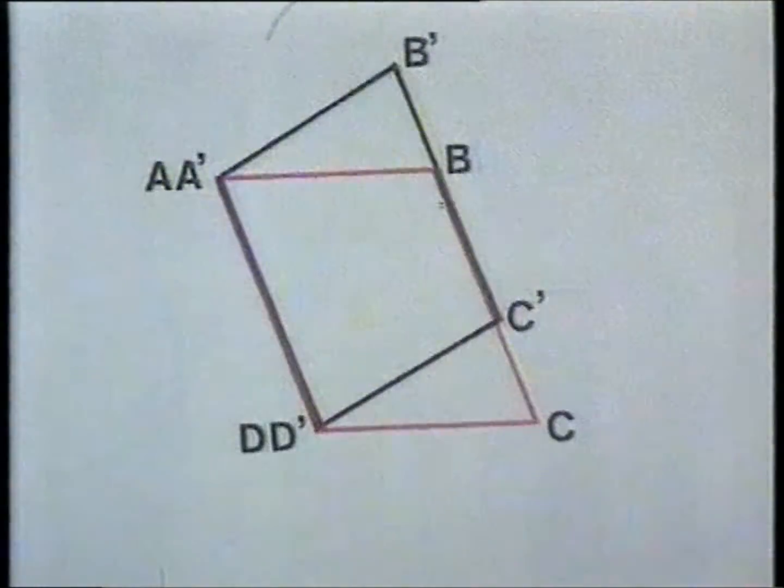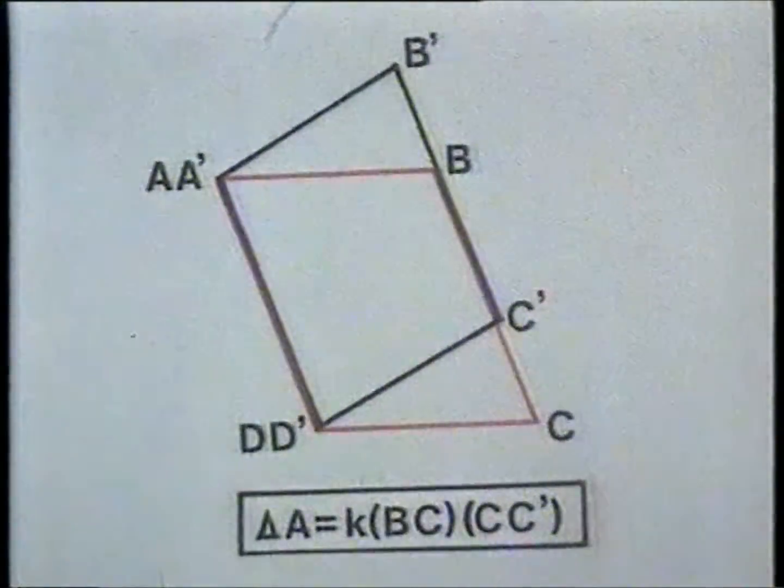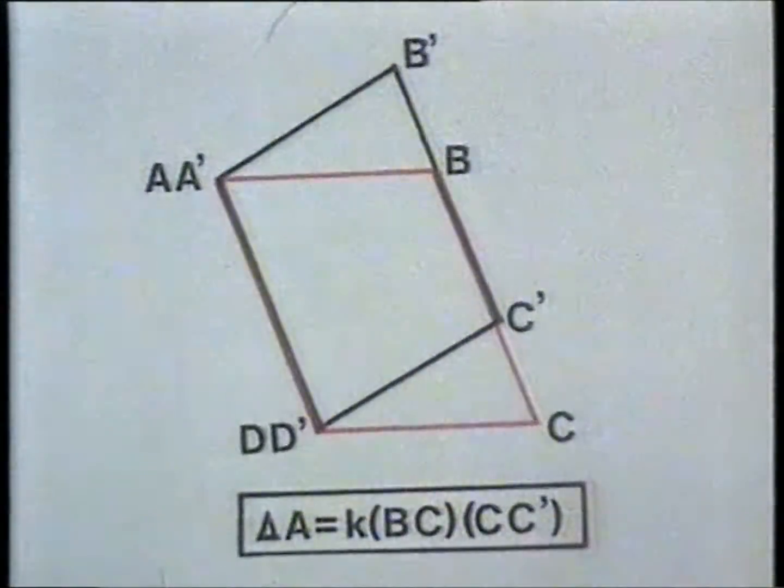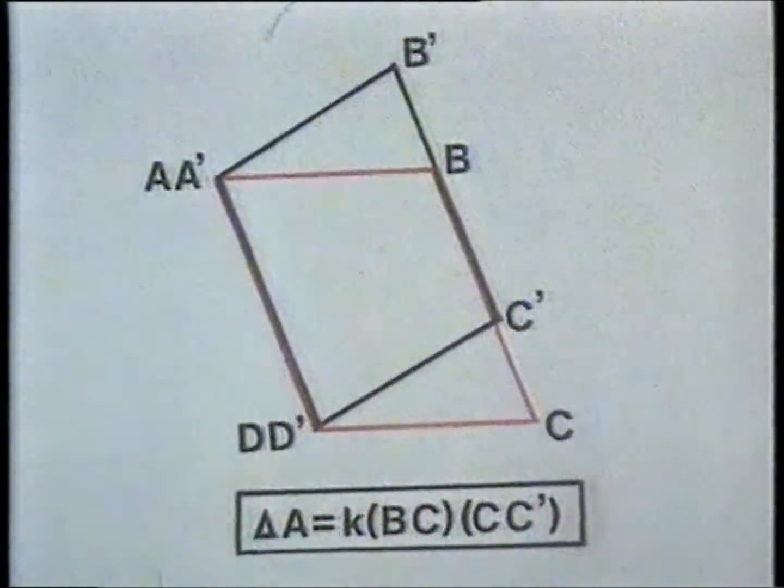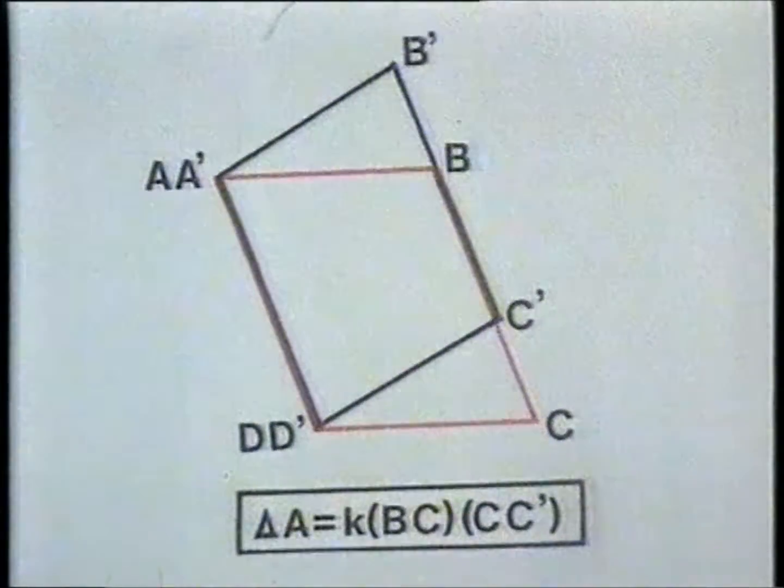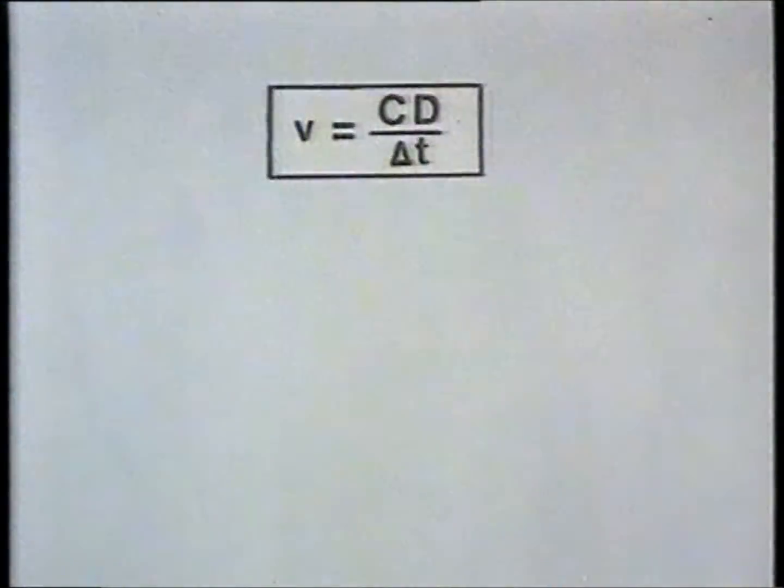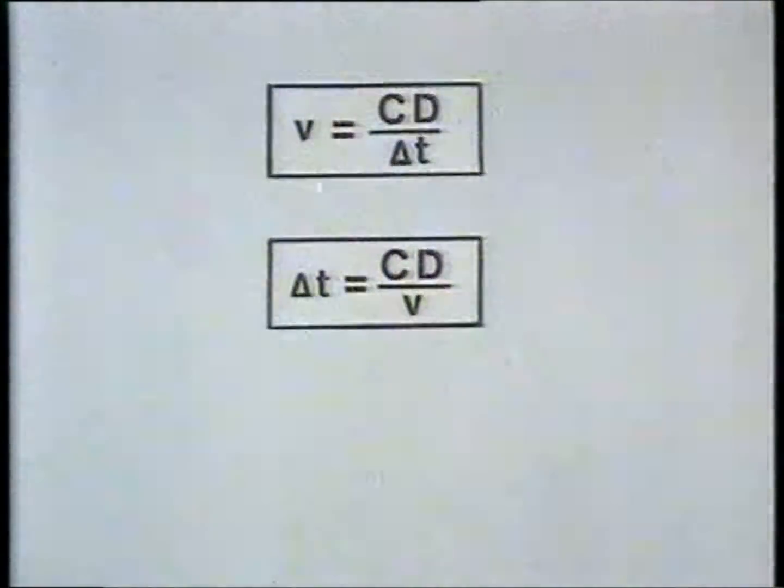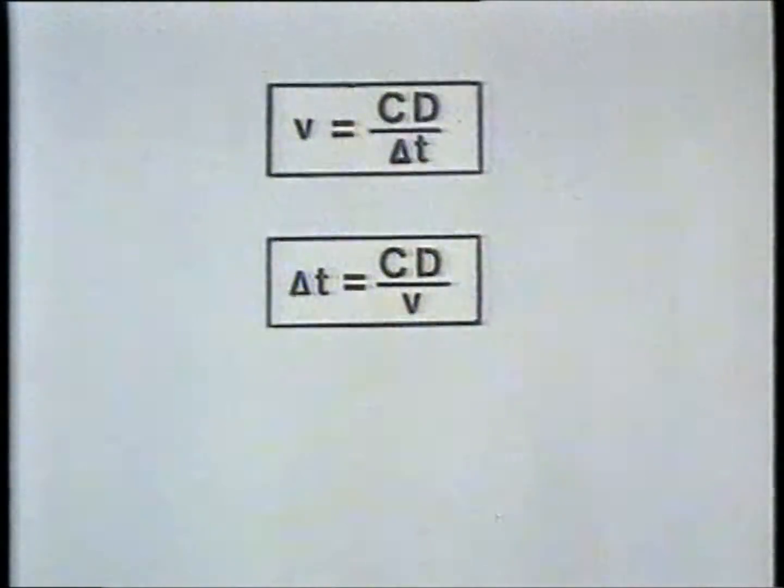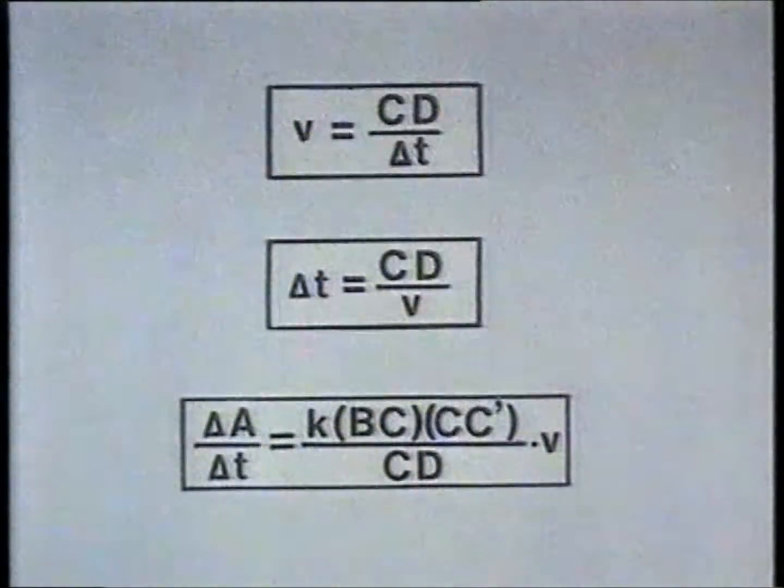Superimposing these elements we see that the work done per unit width delta a is equal to the yield shear stress of the material k multiplied by the length bc and the distance moved cc prime. The time delta t taken for the element to pass the discontinuity is equal to cd over v. The rate of work then becomes delta a divided by delta t.